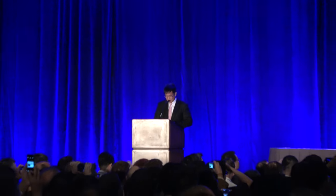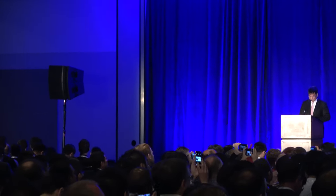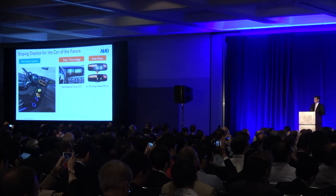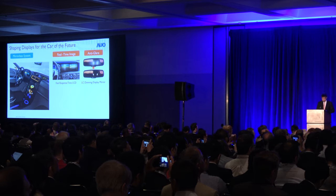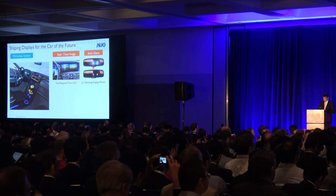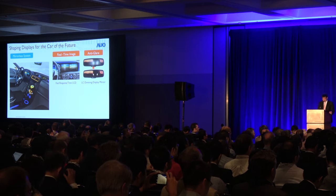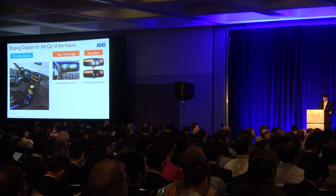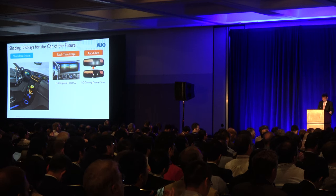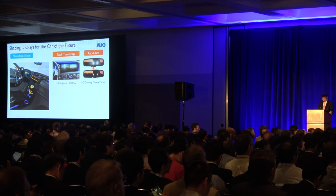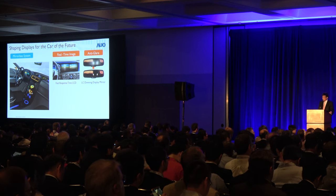LCD for automotive applications will further grow in the future. Mirrorless cars are a reflection of the automotive future. Mirrorless systems can help improve fuel efficiency and enhance driving safety. Automakers are stepping up efforts to use cameras and LCD screens in place of side-view and rear-view mirrors. Fast-response LCD can meet the criteria with new liquid crystal materials and new panel driving modes. By using liquid crystal dimming technology, LCD can deliver better anti-glare function than the electric anti-glare rear-view mirror.